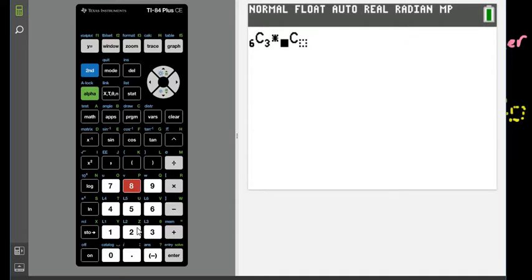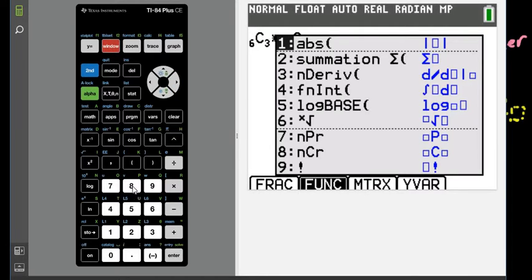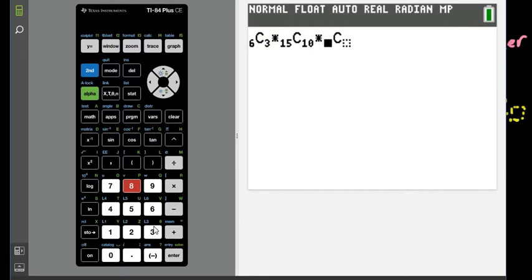15 and 10 and then you would just do times alpha F2 option 8 and you would put in your values again so this time it would be 9, 7 and you end up with 2,162,000.